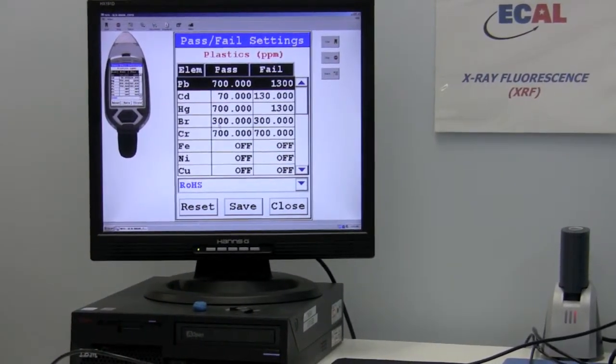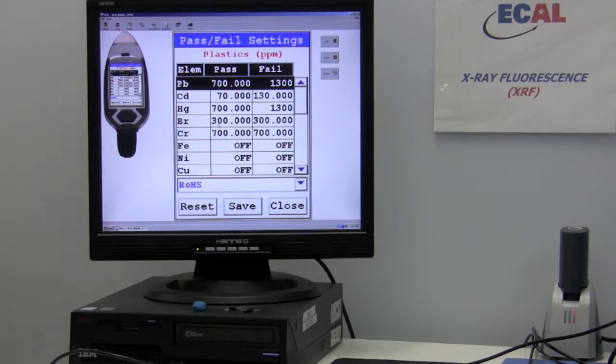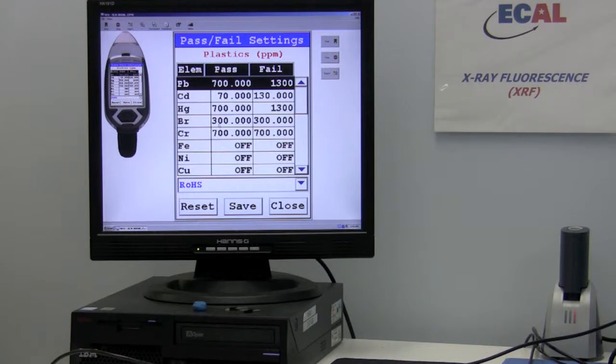All right, so this is the ROHS rules. And so if you know the rules at all, then you know that, for example, ROHS says lead has a limit of 1,000 parts per million.